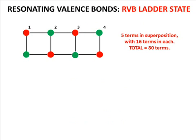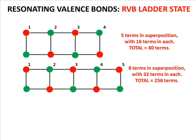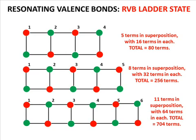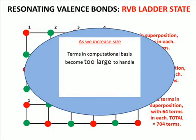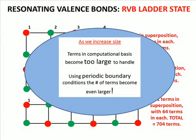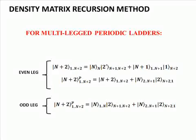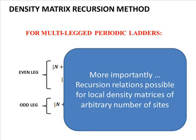A superposition of all such coverings is called a resonating valence bond state, or an RVB state. We deal with such RVB states on ladders. By a brute force method, such a quantum state is usually difficult to handle, as we can see for this two-legged ladder, where by increasing the number of rungs we land up in a huge superposition. The density matrix recursion method, or the DMRM, bypasses this difficulty by using a recursive approach to express the quantum state efficiently. More importantly, we show that recursion relations exist for local density matrices also. We use such recursion relations to find the genuine multi-site entanglement of large superpositions.